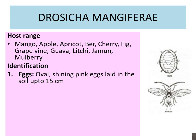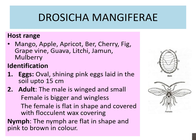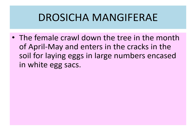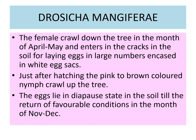Identification: Eggs are oval, shining pink, laid in the soil up to 15 cm deep. The male is winged and small; the female is bigger and wingless. The female is flat in shape and covered with a flocculant wax covering. Nymphs are flat in shape and pink to brown in color. The female crawls down the tree in April-May and enters cracks in the soil for laying eggs in large numbers, cased in white egg sacs. Just after hatching, pink to brown colored nymphs crawl up the tree. The eggs lie in a diapause state in the soil until the return of favorable conditions in November-December.